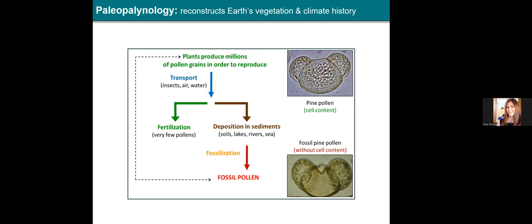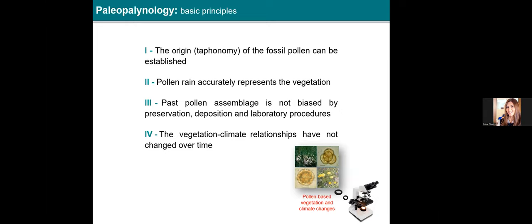Very lucky for us, some grains are trapped in suitable settings such as anoxic sedimentary environments that exist in soils, lakes, rivers, and oceans, where pollen grains are preserved for hundreds, thousands, or even millions of years. During the fossilization process, the cellular content of the pollen is lost, but its external wall, called the exine, allows the pollen to be preserved because this substance is chemically very resistant.